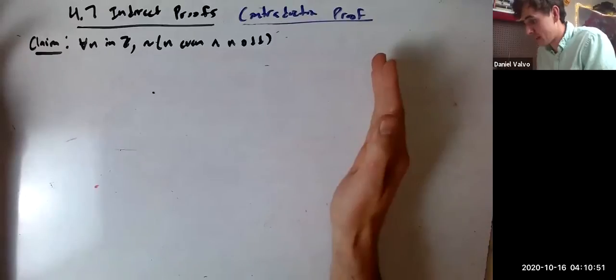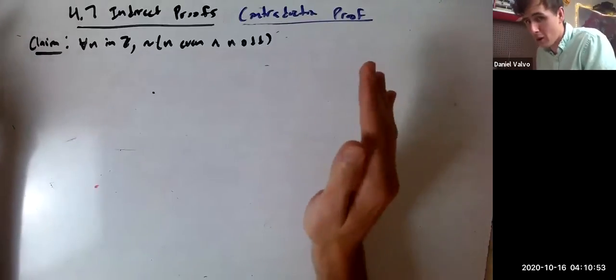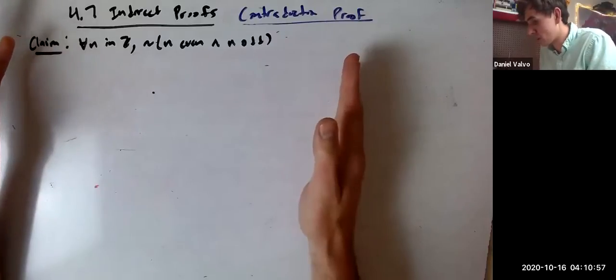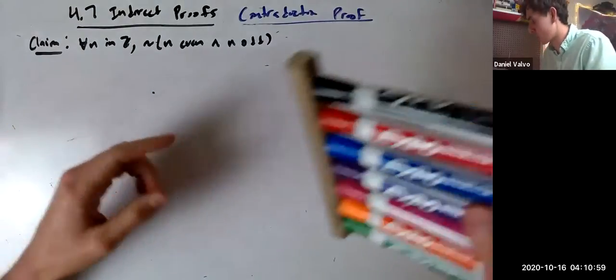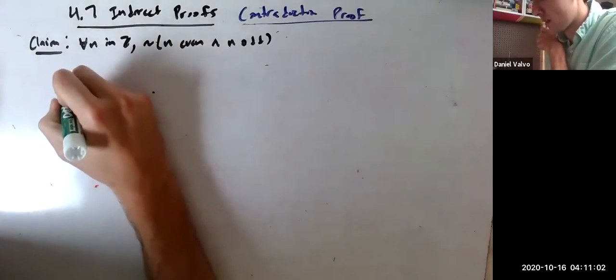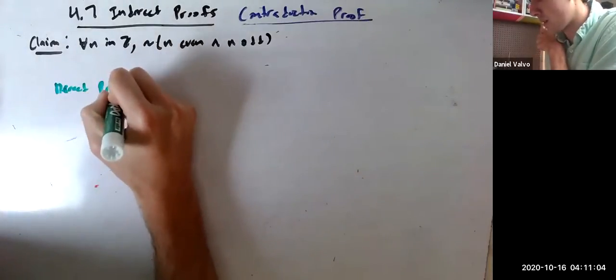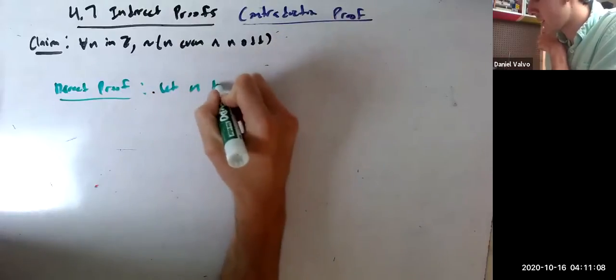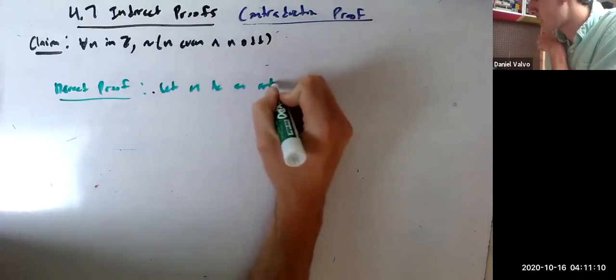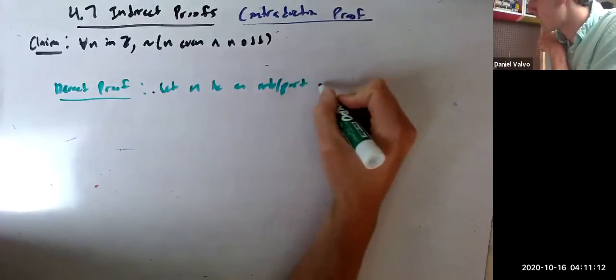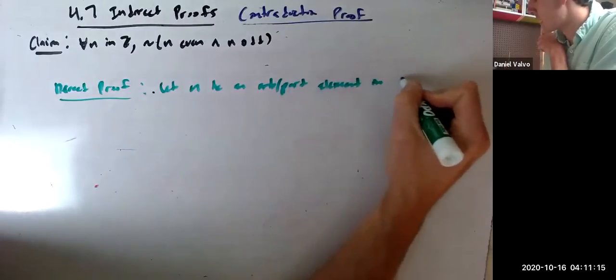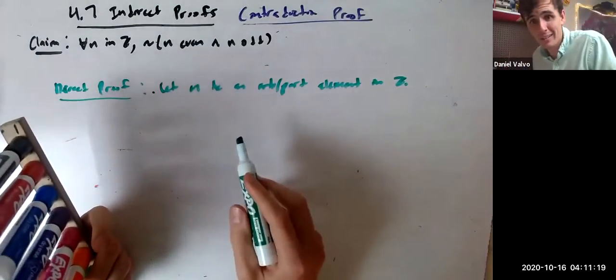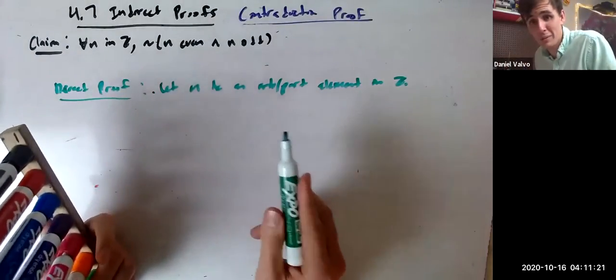Notice this would be very hard to prove directly. A direct proof would say: let N be an arbitrary element in Z. And that's it. That's the only thing you're allowed to assume.